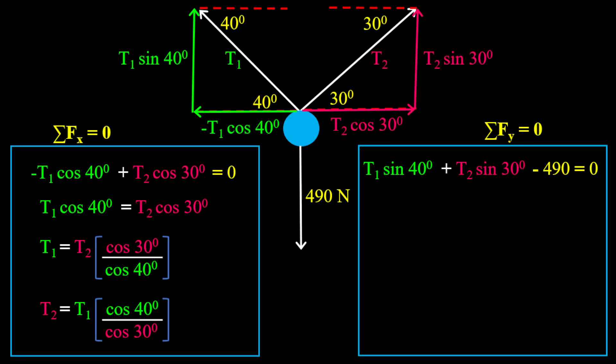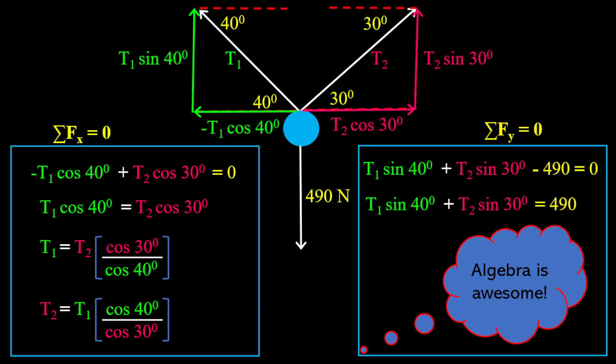Going towards our Y, we have all the Y forces — and notice there are three Y forces: T1 sine 40 plus T2 sine 30 degrees minus 490. The 490 is acting downwards, that's why it is minus. It must equal to zero. From this expression, T1 sine 40 degrees plus T2 sine 30 degrees must equal 490. From these two equations, we can use the algebra method to solve for T1 and T2, and we can also use simultaneous equations. So we have two methods coming out of this: algebra and simultaneous equation.